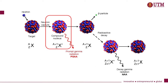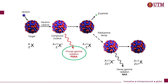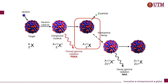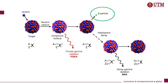This leaves the nucleus in an excited state. The excited nucleus promptly relaxes towards its ground state by emitting gamma rays. The de-excitation of the atom forms a new isotope which is still radioactive. It is unstable to beta decay.